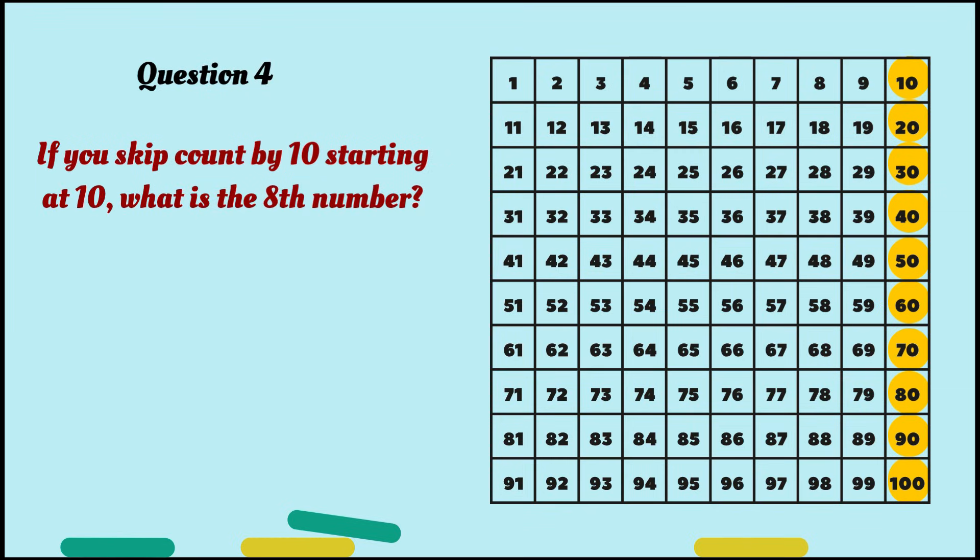Question number 4. If you skip count by 10, starting at 10, what is the 8th number? Hmm. You can always refer to that grid. So, let's start from 10. 10, first number. 20, second number. 30, third number. I'm sure you guys have got the hang of it. What is the 8th number?